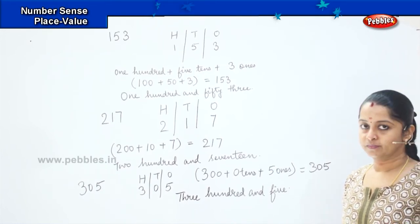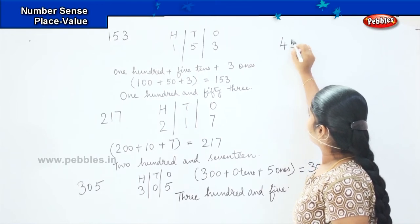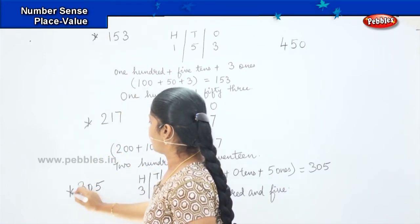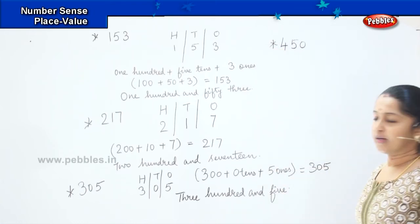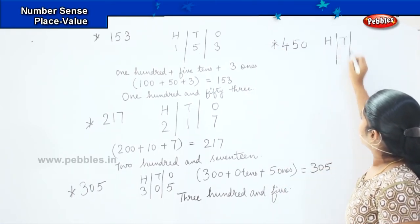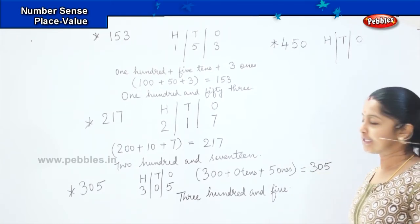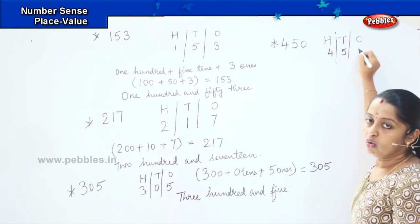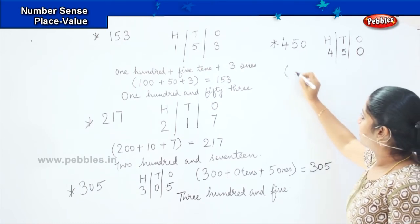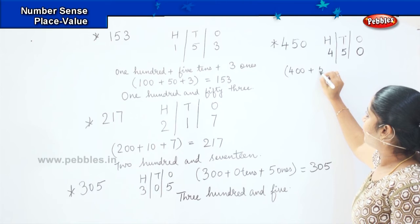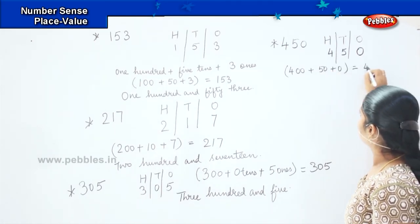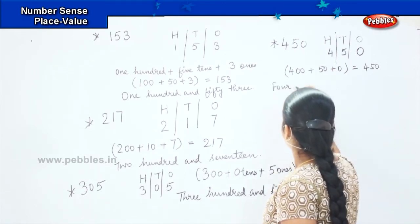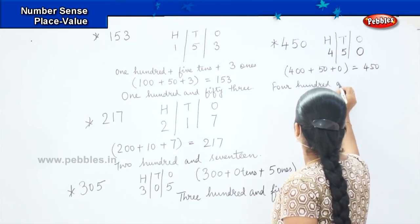Shall we do some more sums? Tell me how will you write four hundred and fifty. We have done three and this is my fourth sum. You will split it into three groups of H, T, O. What will come in H? Four. In tens it will be five. And what will come in O? Zero. You will write as four hundred plus fifty plus zero, which equals to four fifty. The number name is four hundred and fifty.